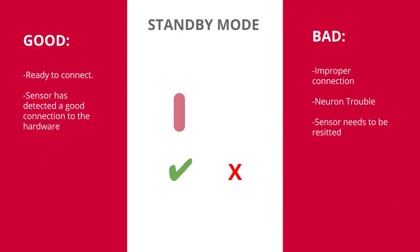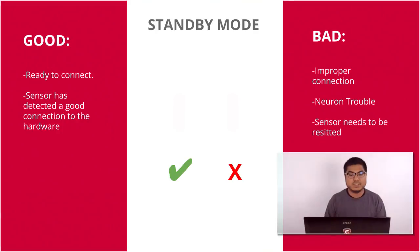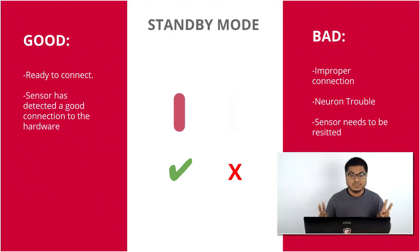A bad sign is when you see a blinking light before you connect your suit to Axis Neuron. That can indicate a firmware issue inside of the sensor, or it can mean the sensor is not properly seated. In that case, simply remove the sensor from the socket, place it back in, and see if the light changes to breathing mode. If the sensor does not return to breathing mode, you might have to perform a firmware update inside of the Axis Neuron update tool.